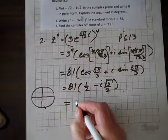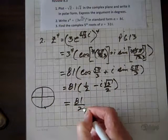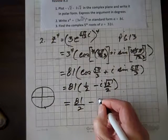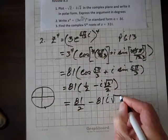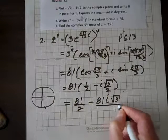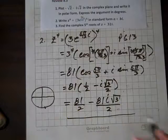And now multiplying through by 81, we have 81 over 2 minus 81i root 3 over 2, and that's standard form, and we are done.